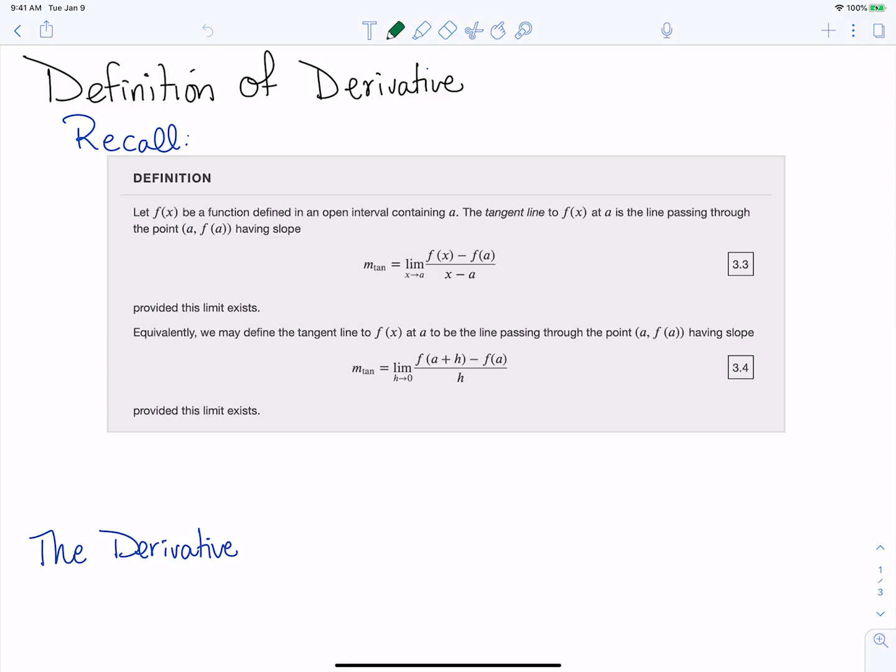We talked about this last time. We have this limit notation that we're going to learn more about next week. Right now what we really need to know is this is saying that as x gets very close to a, our slope of our secant line is going to get closer and closer to the slope of the tangent line.